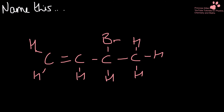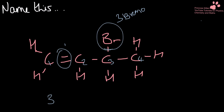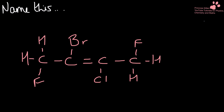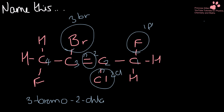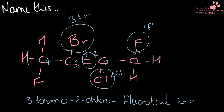Name this one. One, two, three, four — I have a double bond on one and then I have a three-bromo functional group as well. So that gives me 3-bromobut-1-ene. Name this one. I have one, two, three, four. I've also got a functional group here so I need to start numbering here for the lower number. I have a double bond on two, a one-fluoro, a three-bromo, and a two-chloro. So in alphabetical order: 3-bromo-2-chloro-1-fluorobut-2-ene.